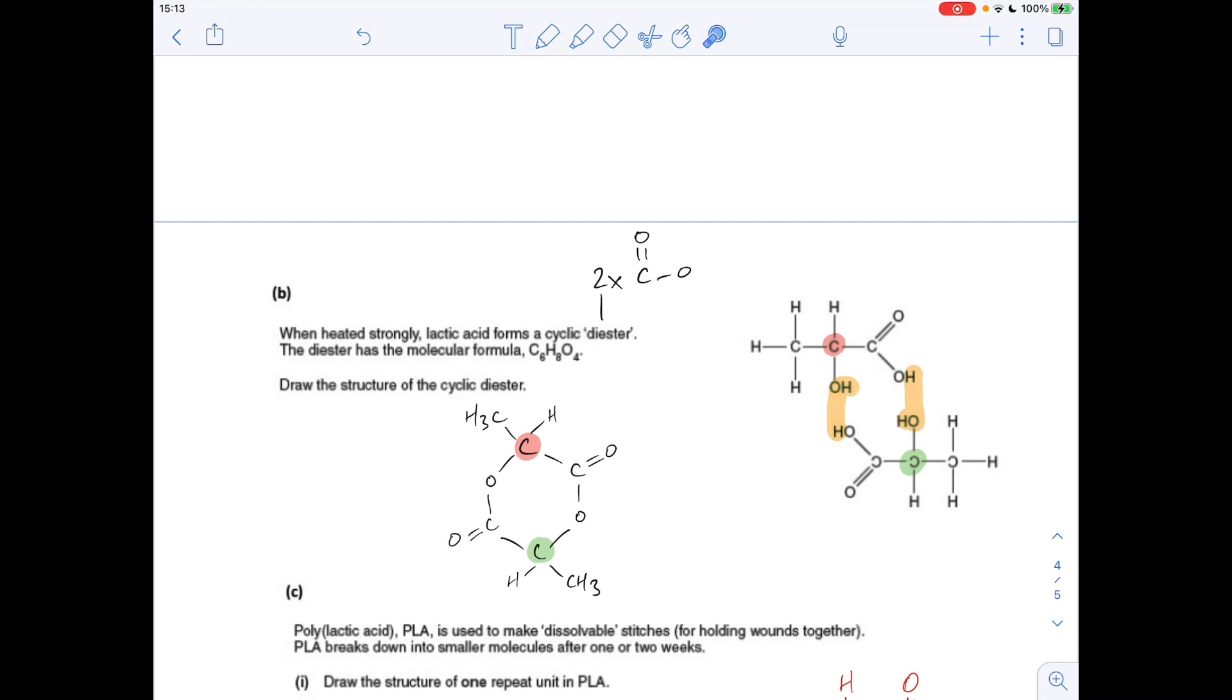Next part, quite tricky to visualise this one, and it does catch students out. We're told that when heated strongly, lactic acid forms a cyclic diester. So cyclic just means a ring, diester just means two ester groups. So I've taken two lactic acid structures. This one here I've flipped round. I've positioned the carboxylic acid group of the bottom structure alongside the alcohol group of the top structure. And sort of vice versa here. We've got the carboxylic acid group of the top structure next to the alcohol group of the bottom structure. We remember that these two functional groups can combine to form an ester group. So we're going to get two ester groups this way. These orange splodges are just to say that the water's going to come out here and here.